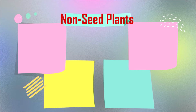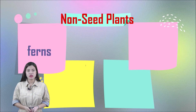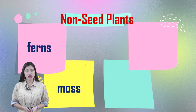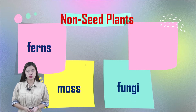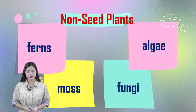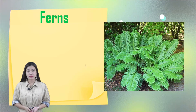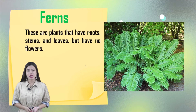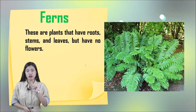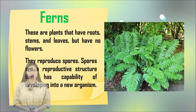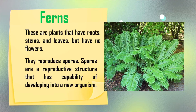Next, we have non-seed plants. There are four types: ferns, moss, fungi, and algae. Let's talk about ferns first. Ferns are plants that have roots, stems, and leaves, but have no flowers. Ferns reproduce by spores. Spores are a reproductive structure that has the capability of developing into a new organism.